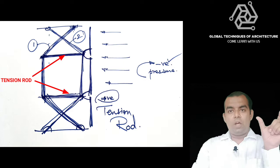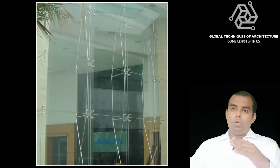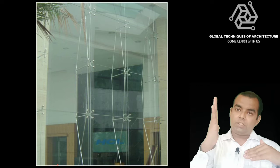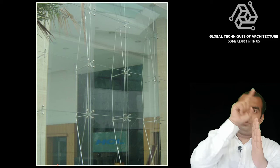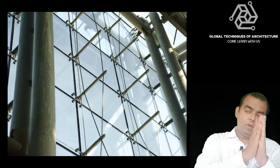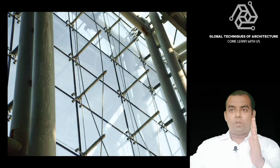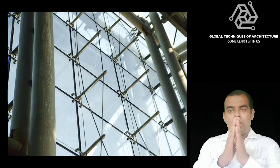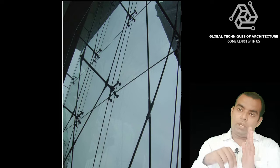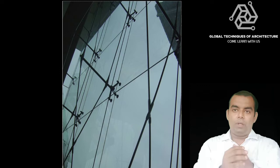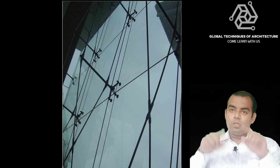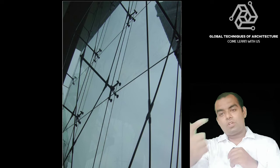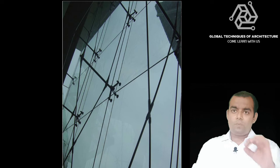The second system is the tension rod system. You have a rod in between with tension ropes. During a positive wind gust — when wind moves toward the facade and hits the elevation — the inner tension rod goes under tension while the outer one remains in compression. With a negative wind load, this reverses. The rod maintains tension between the two wires, so it is also called the tension wire system. A beautiful installation of this can be seen at Mumbai International Airport.